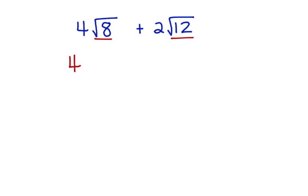We leave the 4 alone. The square root of 8 we can break down to the square root of 4 times the square root of 2, plus 2. Again, the square root of 12 we can break down to the square root of 4 times the square root of 3.